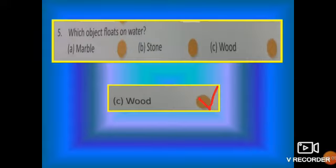Now, last number. Which object floats on water? Options are marble, stone and wood. Now, marble and stone being denser than water, both will sink in water. Whereas, wood will float on the water.